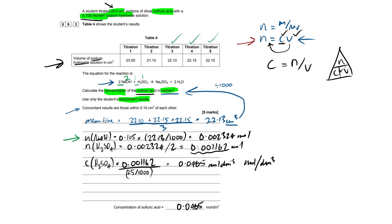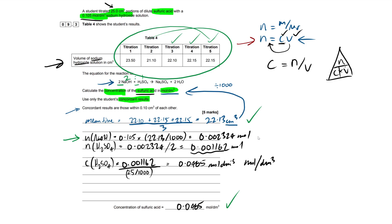So where are we picking up marks? We get all five marks for the correct final answer. But if you don't get it right, show your working — just like in maths. The marks are for: the mean titre from the table, the moles of sodium hydroxide, the moles of sulfuric acid, and converting that to the concentration of sulfuric acid. Hopefully that was helpful — like the video and subscribe for future science and maths content. Best of luck in your exams!